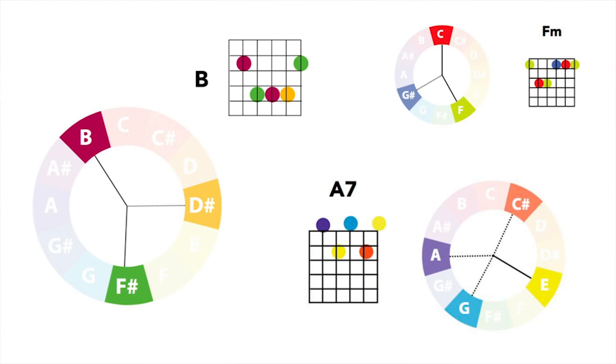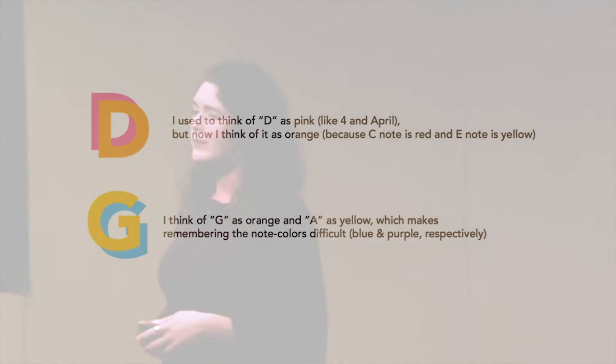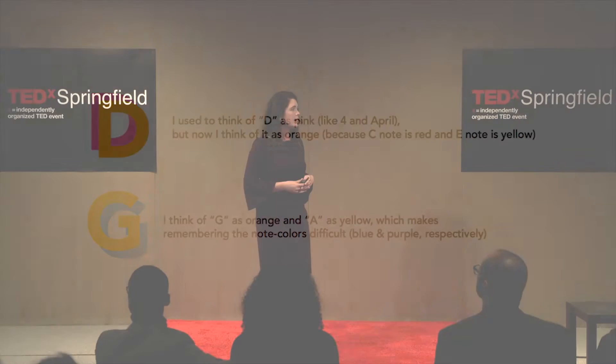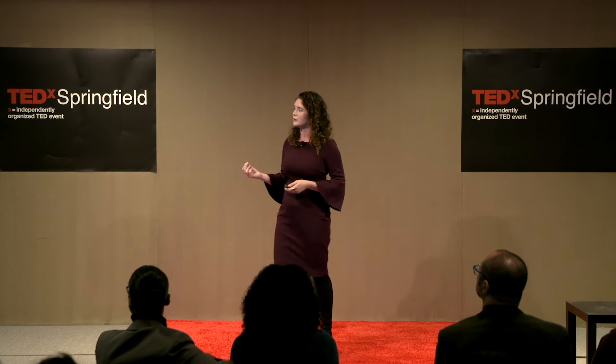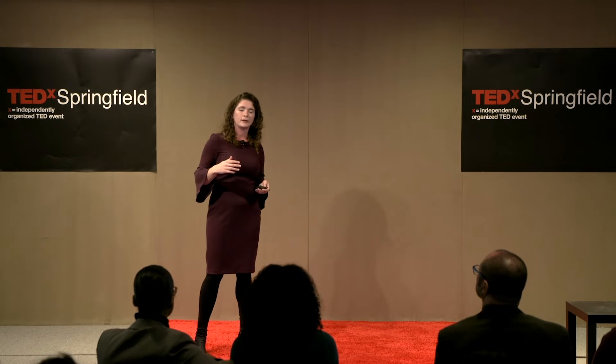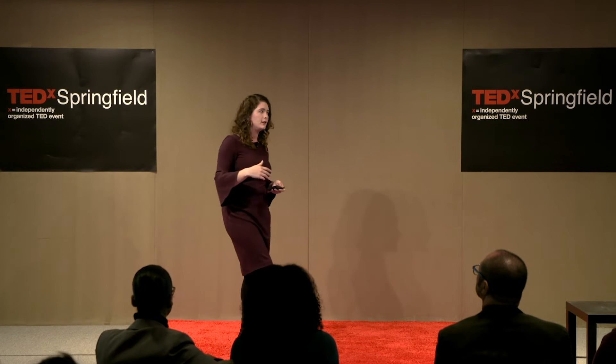I continued on my visualization track and started creating illustrations of chord diagrams — how harmonics work when you're playing a chord on the guitar. I showed these to musician friends who got really excited and started pointing me to other musicians and visualizations. I also realized an unintended consequence: my existing synesthesia for letters was being supplanted by the new system I had created. While I previously thought of the letter D as pink, I started thinking of it as orange because I had mapped the D note to the letter D.